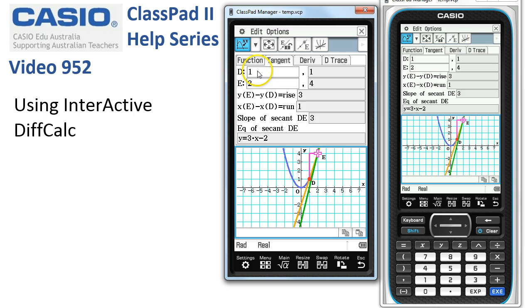You can see up here these are the x coordinates of D and E, and here are the y coordinates. ClassPad's calculating the slope of the secant, the orange line that runs through the two points D and E.